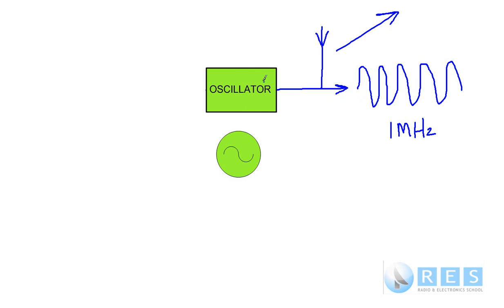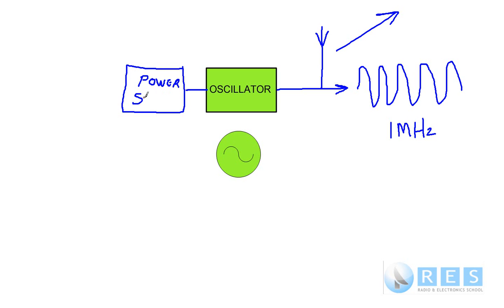However, an oscillator needs a power supply to do that, because an oscillator can't produce something out of nothing. So what you're looking at now in the very simplest form is a radio transmitter. A power supply and an oscillator is the simplest form of radio transmitter. Not incredibly useful, but it will transmit. That is the simplest radio transmitter.